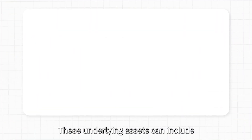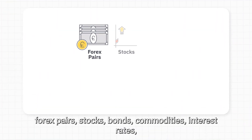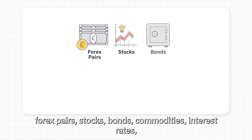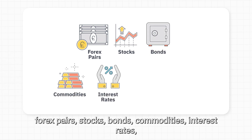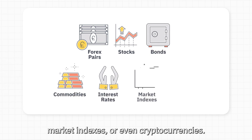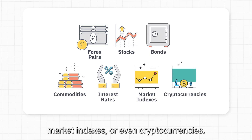These underlying assets can include forex pairs, stocks, bonds, commodities, interest rates, market indexes, or even cryptocurrencies.